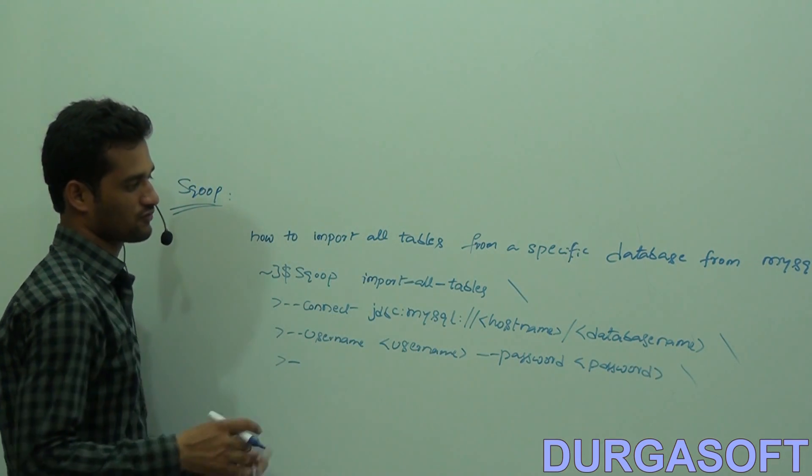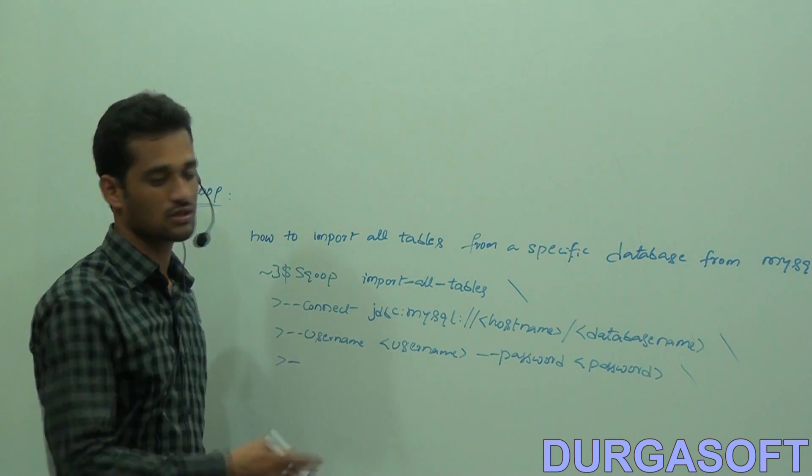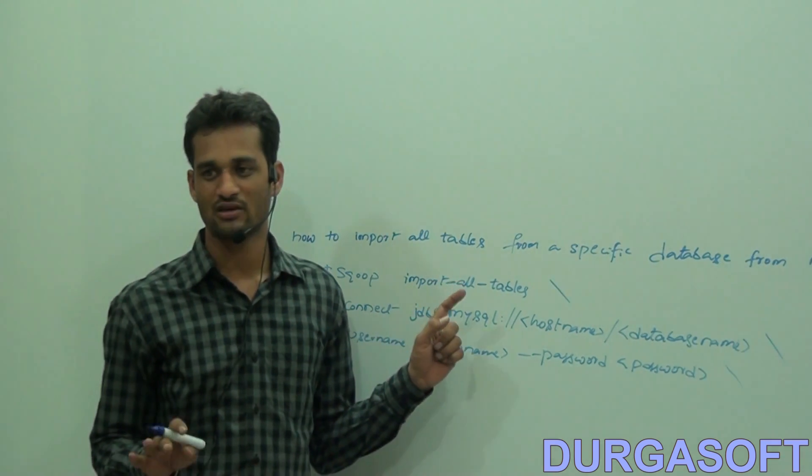Suppose you have five tables, ten tables, fifteen tables, or even a hundred tables - all these tables will be imported into your HDFS. One more thing: each table may have any number of fields.